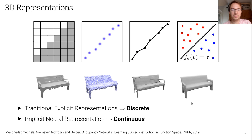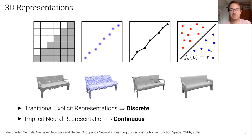In our work at CVPR 2019 we proposed an alternative representation called occupancy networks, where instead of representing the output explicitly, we represent the surface implicitly as the decision boundary of a neural network classifier to distinguish inside from outside points.